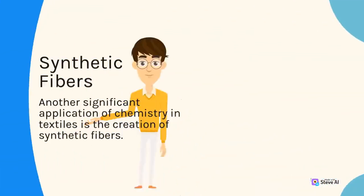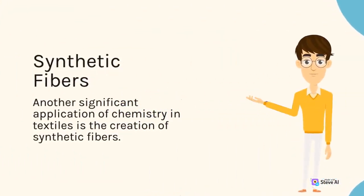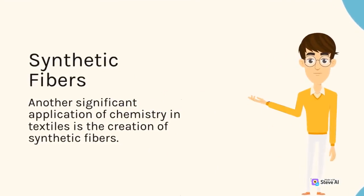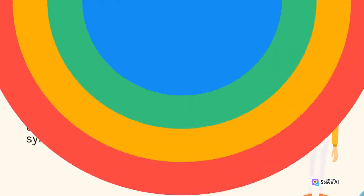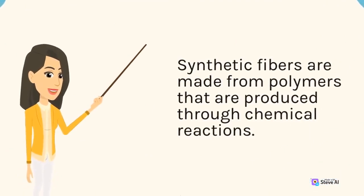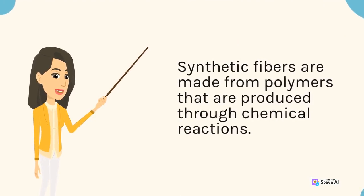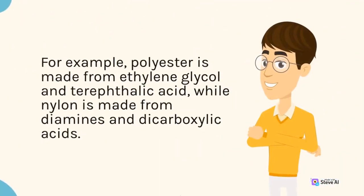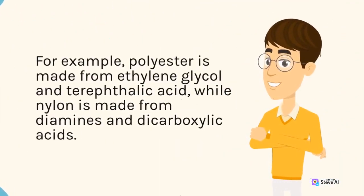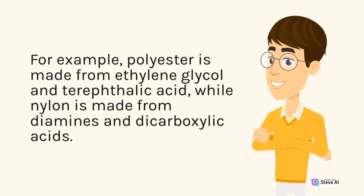Synthetic Fibers: Another significant application of chemistry in textiles is the creation of synthetic fibers. Synthetic fibers are made from polymers that are produced through chemical reactions. For example, polyester is made from ethylene glycol and terephthalic acid, while nylon is made from diamines and dicarboxylic acids.